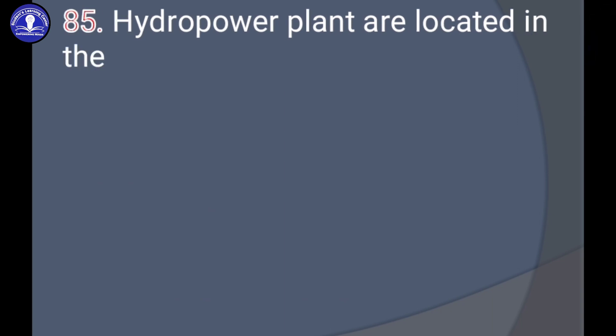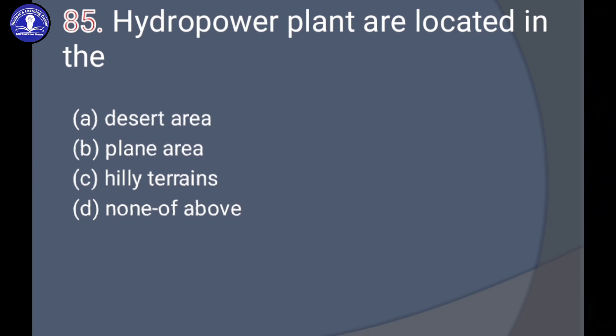Next question: Hydropower plants are located in the desert area, plane area, hilly terrains, or none of the above. Hydropower system uses a dam to store river water in a reservoir. Water released from the reservoir flows through a turbine, spinning it, which activates a generator to produce electricity. So the answer is hilly terrains.